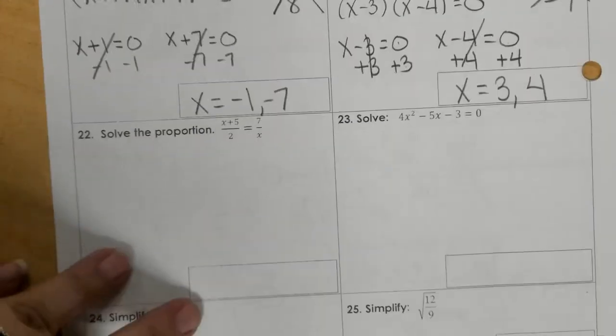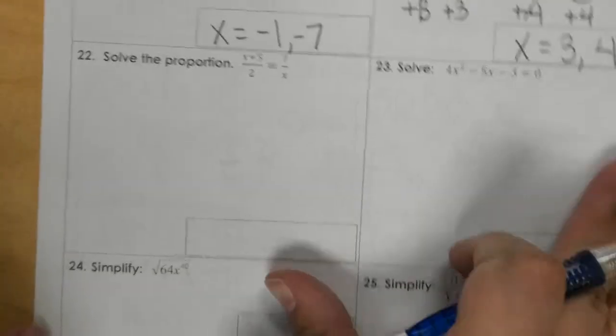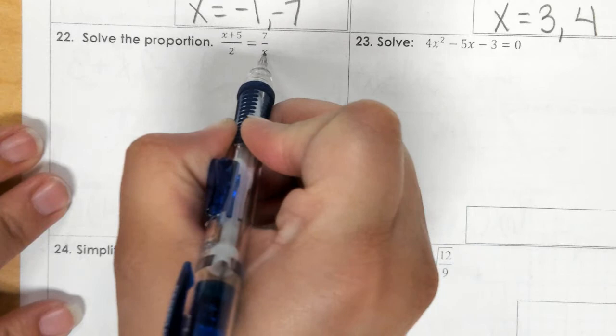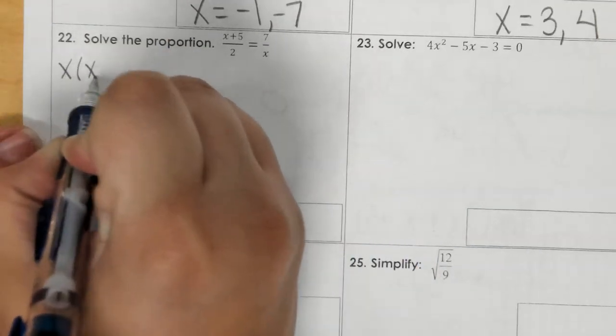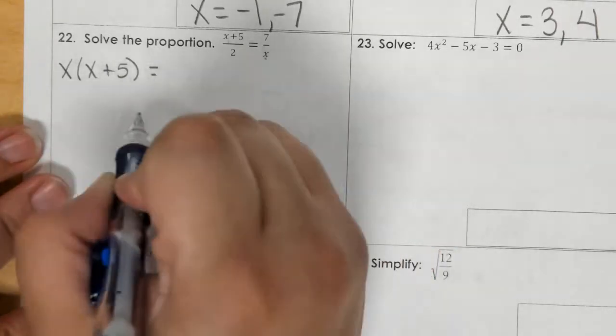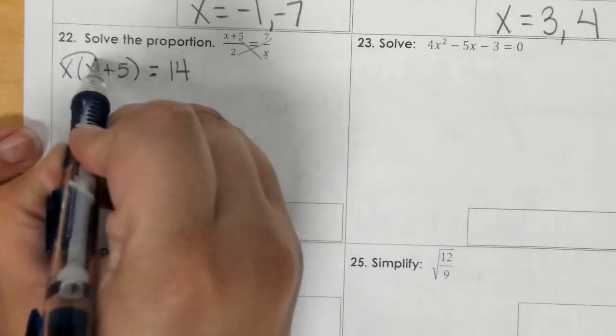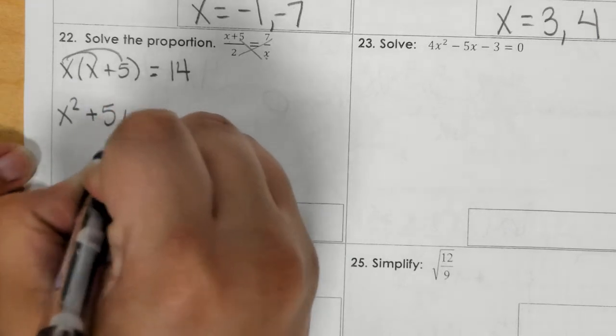And number 22, for this one, you would need to distribute. So I'm going to take the x times the x plus 5. I always want the x on the left side. So I did x times the quantity x plus 5 equals 2 times 7, which is 14. So if I distribute this, we get x squared plus 5x.